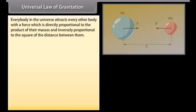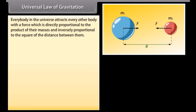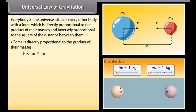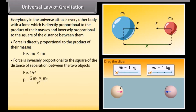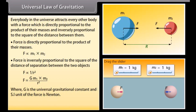Universal law of gravitation. Every body in the universe attracts every other body with a force which is directly proportional to the product of their masses and inversely proportional to the square of the distance between them. Force is directly proportional to the product of the masses. Force is inversely proportional to the square of the distance of separation between the two objects. Here G is the universal gravitational constant and the SI unit is Newton.